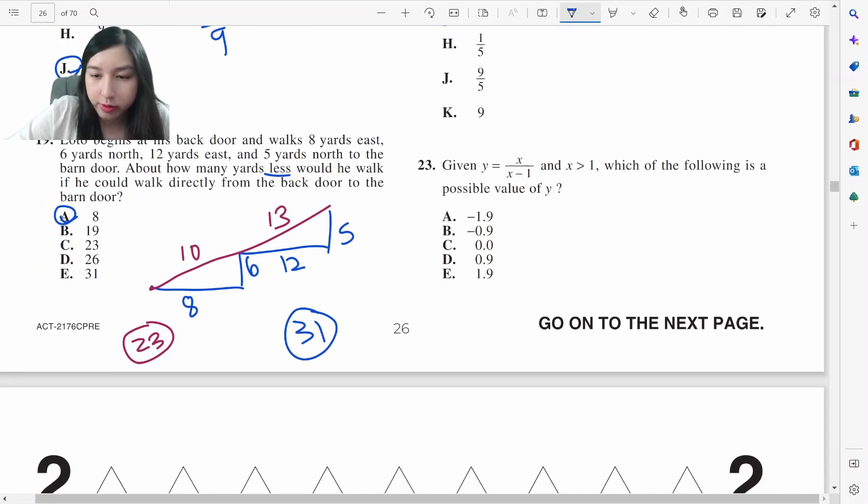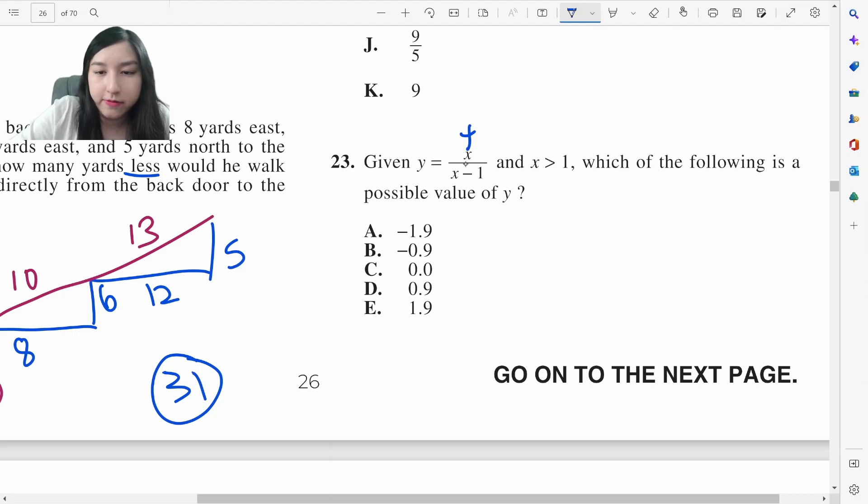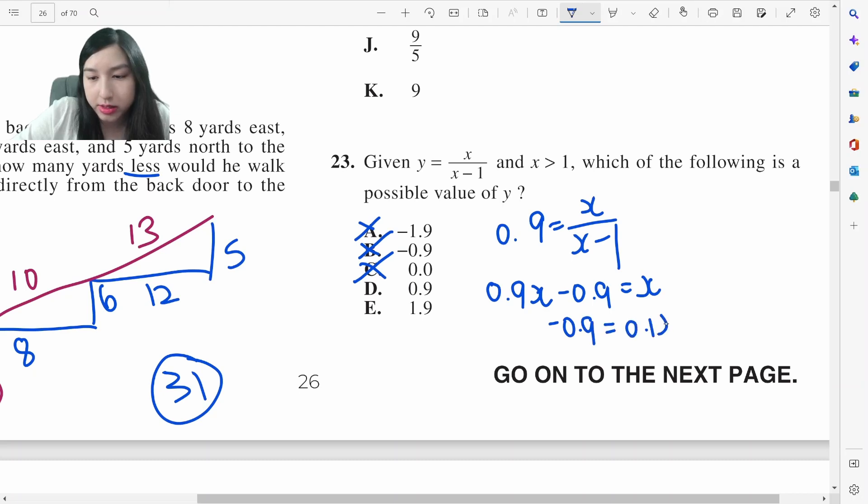What's the possible value of y? If x is greater than 1, this is positive. Something that's bigger than 1 minus 1 is still going to be positive. So our answer has to be positive. If we did 1.9 and 9, let me decide between the two. 0.9x minus 0.9 equals x. Negative 0.9 equals 0.1x. Not possible. It's not D. It's going to be E.